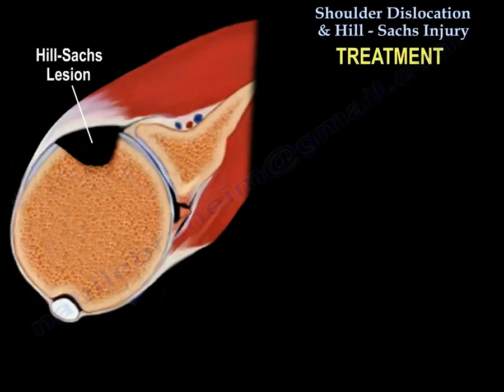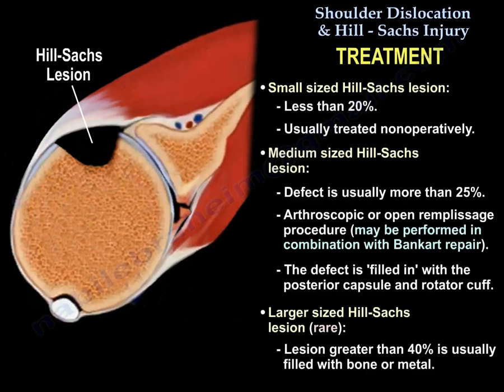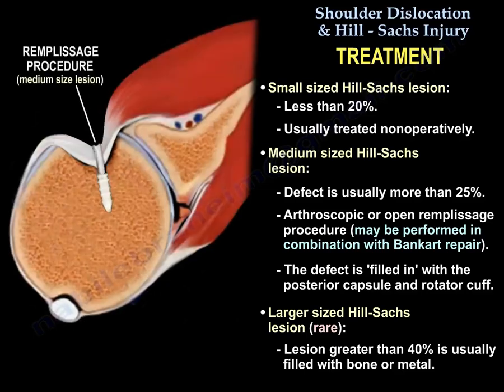Regarding treatment: a small-sized Hill-Sachs lesion, which is less than 20%, is usually treated non-operatively. A medium-sized Hill-Sachs lesion, where the defect is usually between 20 to 40%, is treated with an arthroscopic or open remplissage procedure. This may be performed in combination with a Bankart repair. The defect is filled with the posterior capsule and the rotator cuff, usually the infraspinatus.